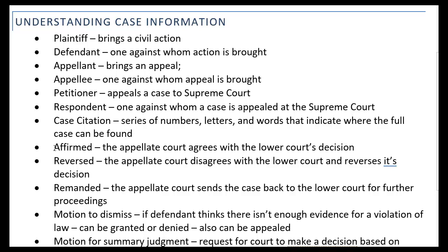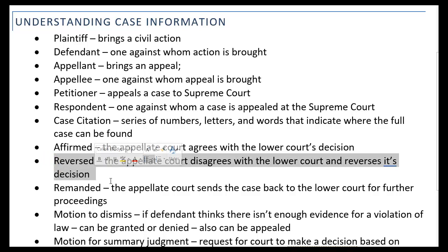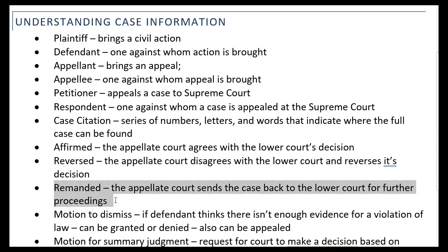Let's say somebody appeals a case to an appellate court. The appellate court hears it, and sometimes you'll see that the appellate court affirms the decision — meaning they agree with the lower court's decision and let it stand. Sometimes, however, they disagree with the lower court's decision so they reverse it. Sometimes the appellate court makes its own decision after reversing. Sometimes the appellate court needs more information or there's reason to send the case back to a lower court for further proceedings — to decide damages, for example.